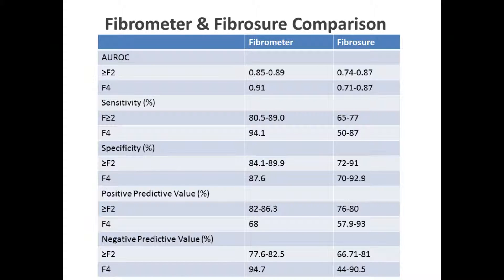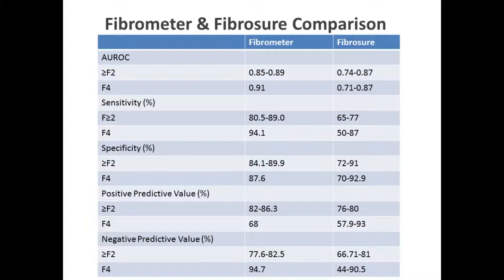How do FibroMeter and FibroSure compare in terms of clinical performance? There have been several studies on this. Data from an independent study by Sebastiani and colleagues compared FibroMeter and FibroSure at the F2 and F4 Metavir stages — the two important clinical decision points — analyzing sensitivity, specificity, positive predictive value, and negative predictive value. As shown in this table, FibroMeter is either equivalent to or better than FibroSure in each category.